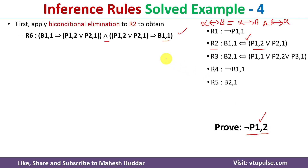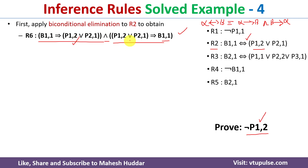After applying biconditional elimination to R2, we get two clauses joined by AND. The question now is which clause to retain using AND elimination — should I retain the first one or the second one?